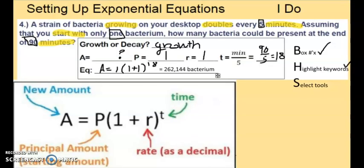This is how many bacteria will be there in 90 minutes. According to the formula that you derived. So we'll write the result on our paper. 262,144 bacterium in 90 minutes.